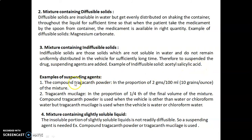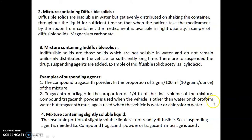Examples of suspending agents: compound tragacanth powder in the proportion of 2 grams per 100 ml, i.e., 10 grams per ounce of the mixture; and tragacanth mucilage in the proportion of one-fourth of the final volume of the mixture. Compound tragacanth powder is used when the vehicle is other than water or chloroform water, but tragacanth mucilage is used when the vehicle is water or chloroform water.